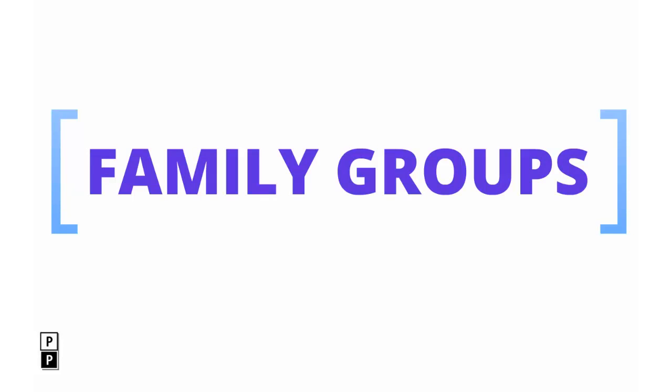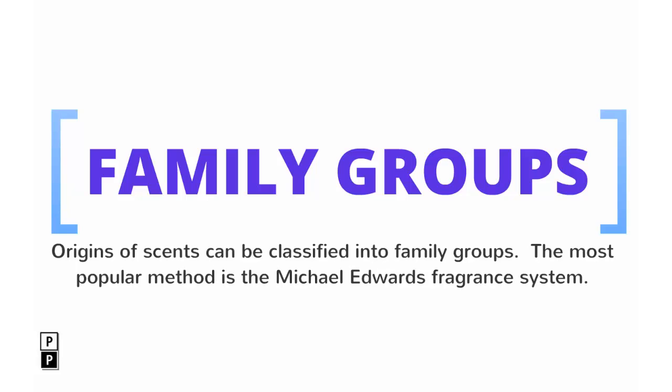In order to take full advantage of your perfume buying experience, there are three main concepts you should keep in mind. The first is the concept of family groups. The source or origins of scents from which perfumes are derived are classified into family groups. The most common and popular method is the Michael Edwards fragrance wheel system.